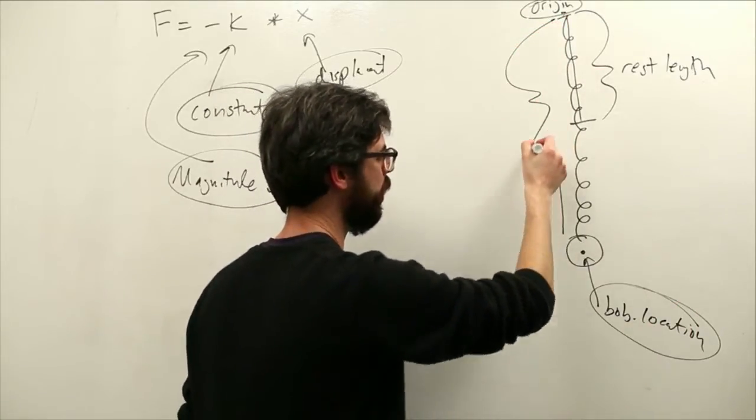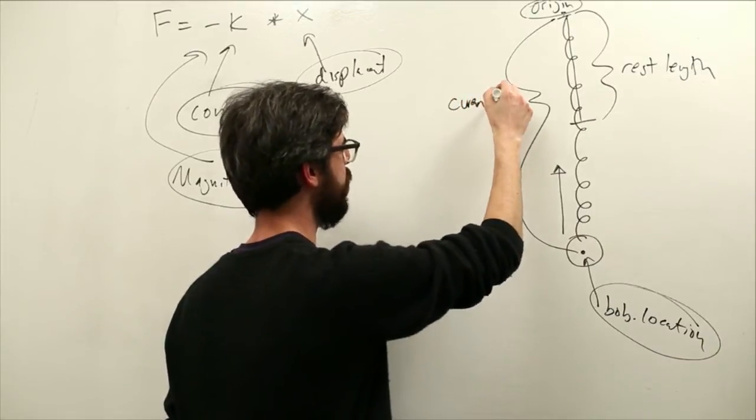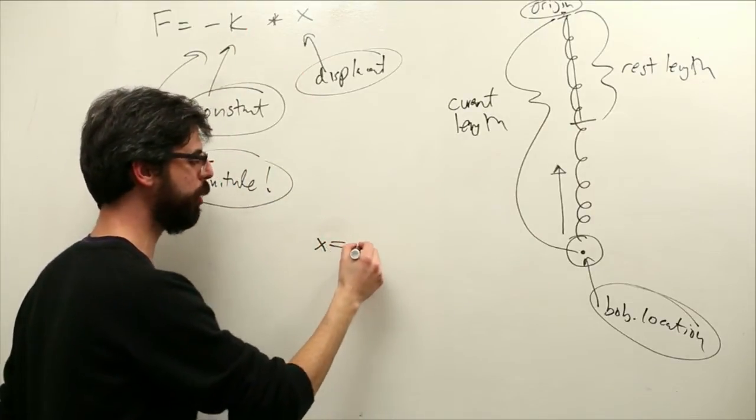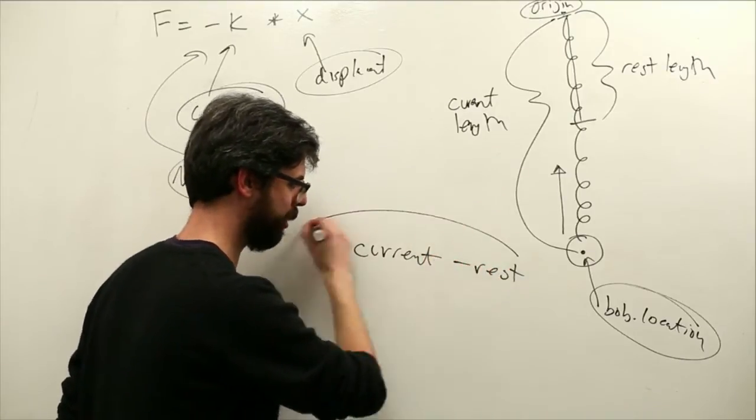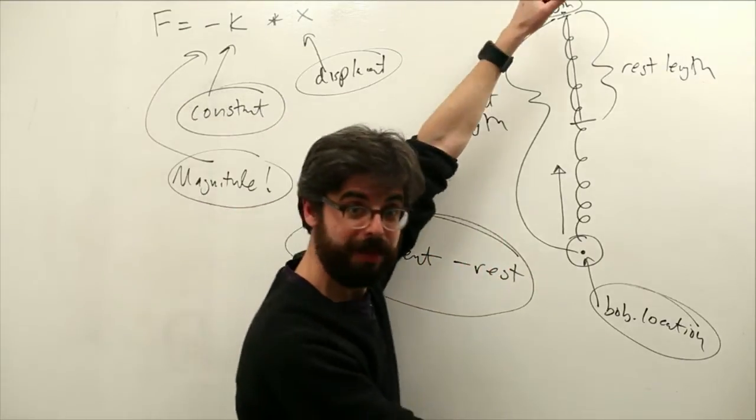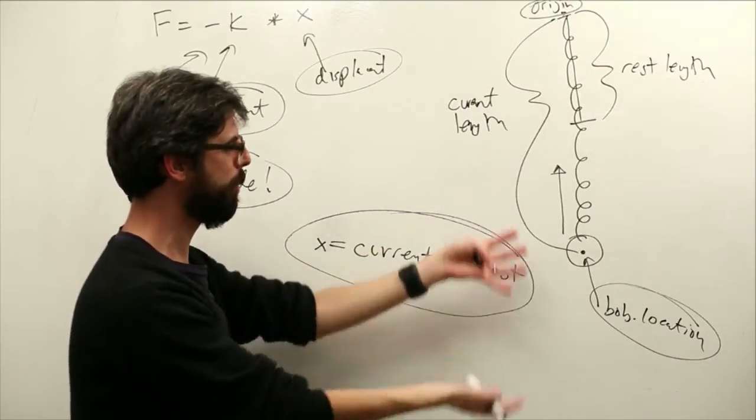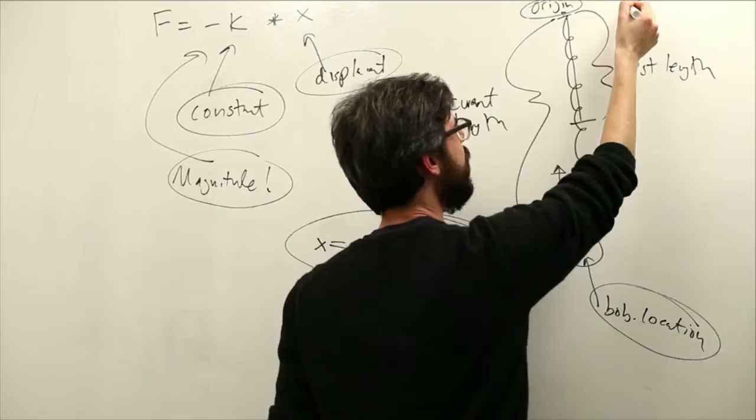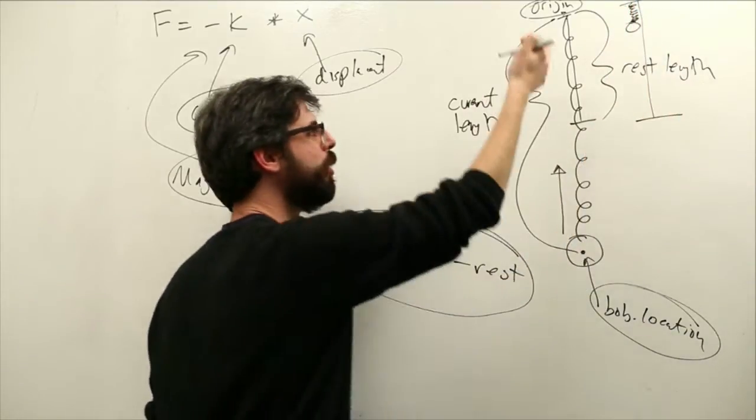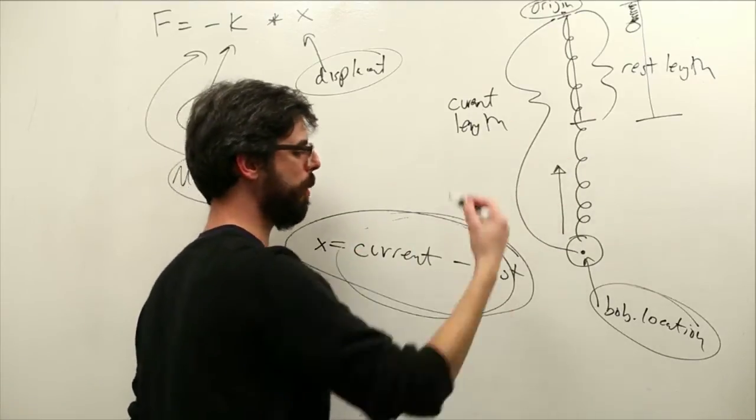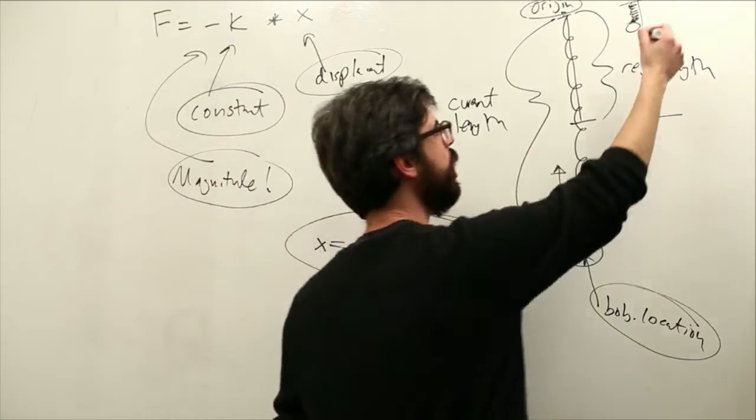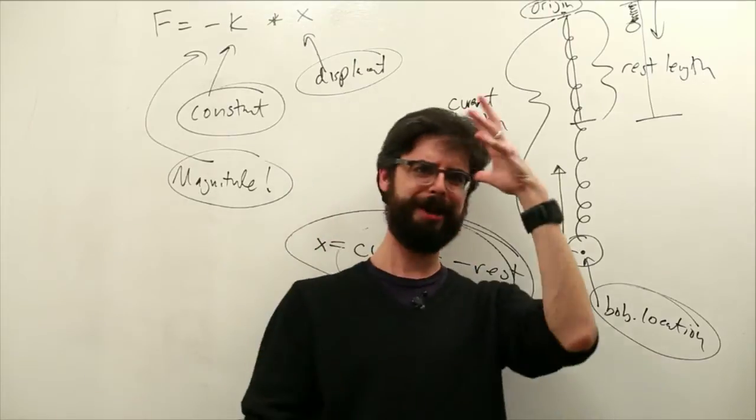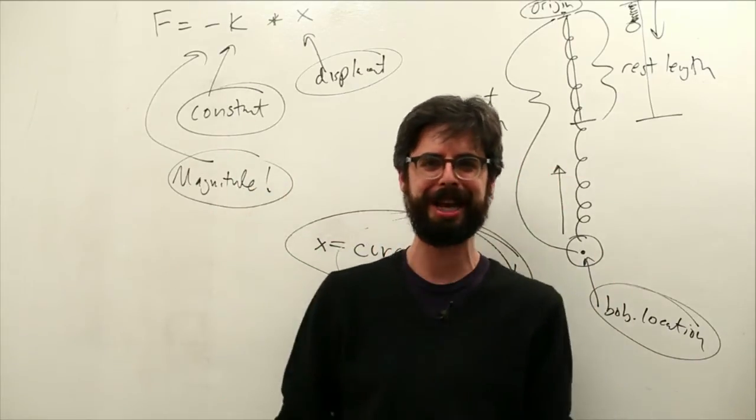We know that if we know this as a location origin, and this we're calling the bob, and maybe this bob is going to be an object with a location, we can make a vector that points from the bob's location to the origin. And then we can calculate its magnitude by saying negative some constant times that displacement. How do we know that displacement? This I would say is the current length. So we have the rest length and the current length. What is x equal to? x is equal to current minus rest. What is the difference between the current length of the spring and its rest length?